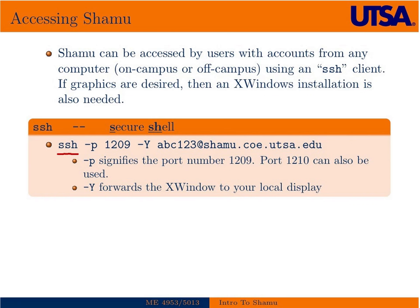Once you have an SSH client, you open a terminal window and use this command: SSH -P 1209 — that's the port number of the login or head node. The -Y flag forwards an X window, which we'll discuss later. Then you use your ABC123 username at shamu.coe.utsa.edu. Port 21210 is the visualization node if you want to do visualization work.